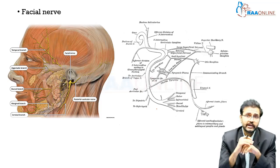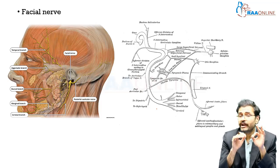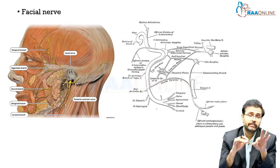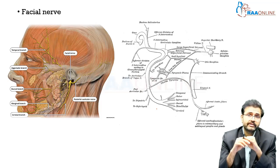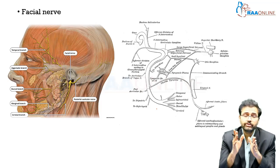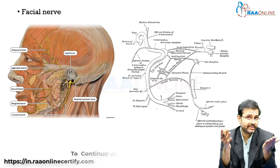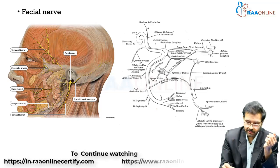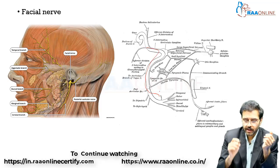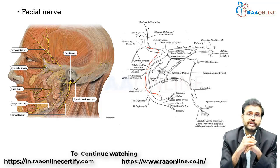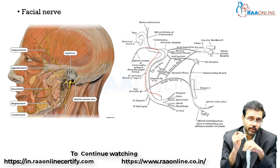Within the petrous part of the temporal bone it enters into what is called the facial canal. Inside the facial canal it is very important to understand three things that happen. One is that it has a course which is like a lazy Z shape — and this course of the facial nerve within the facial canal is very important.